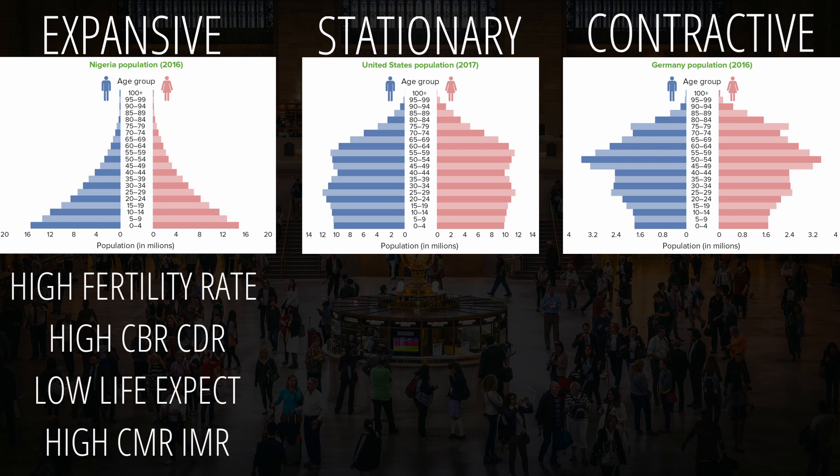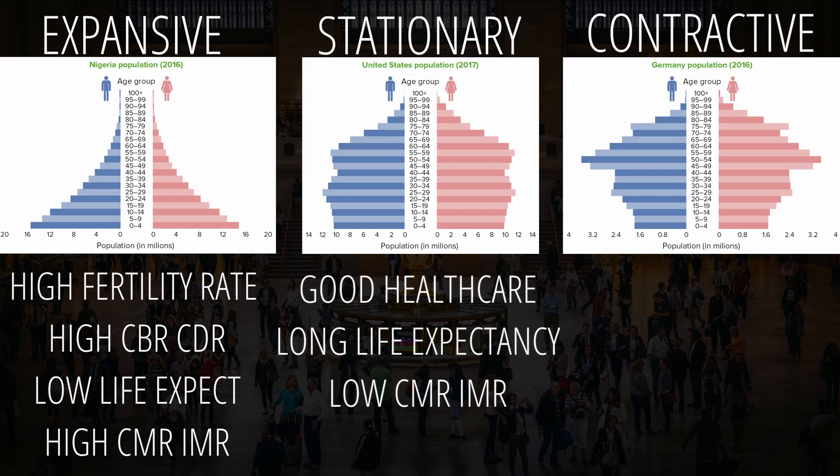Then there's stationary, which looks like a box with a small cap on top. In this population pyramid, the bars look stagnant as they progress through the years, which means they have good healthcare and can prevent diseases. Thus, they are able to maintain a stable population. They have long life expectancies, as shown by the bars' horizontal height, and have low CMRs and IMRs.